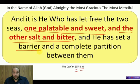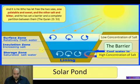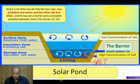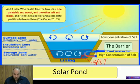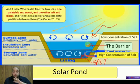That is observed from scientific experiments. In terms of engineering applications, if we have a pond and pump salt into the lower layer — giving it a high concentration of salt, as described in the Quran — the upper layer will have a low concentration of salt. That would create an artificial barrier, a middle insulation zone between them, that will automatically be created.